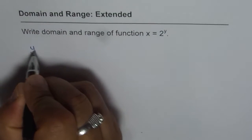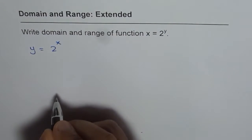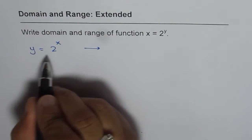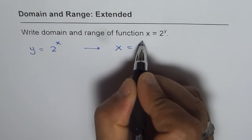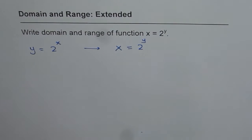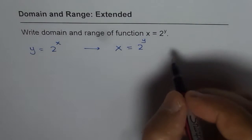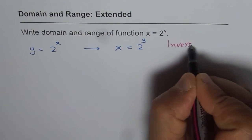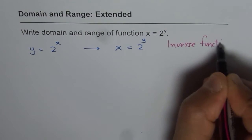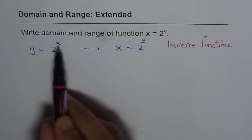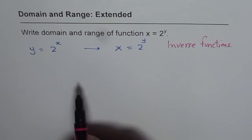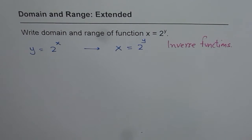You know the function y equals 2 to the power of x. What we have here is not y equals 2 to the power of x, but x equals 2 to the power of y. This gives you the idea that these two are inverse functions. If you swap x and y, you get x equals 2 to the power of y — that means they are inverse functions. We also know that in an inverse function, domain and range also swap.